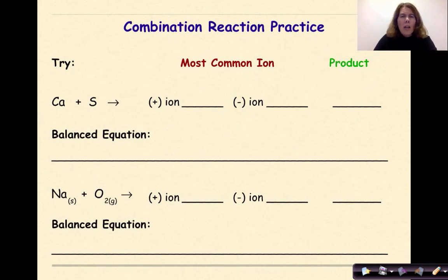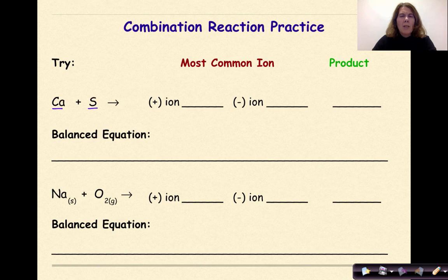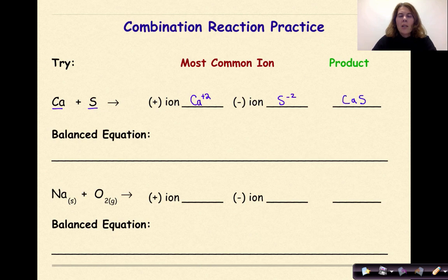So what does it look like when we actually write out combination reactions? Let's do some examples. Let's say that we have calcium plus sulfur and they're going to combine together to make a product. The most common ion for sulfur is S²⁻. So when we put these two ions together, we get CaS. When we write the balanced equation, our reactants would be calcium metal plus sulfur yields calcium sulfide. And this reaction is already balanced.